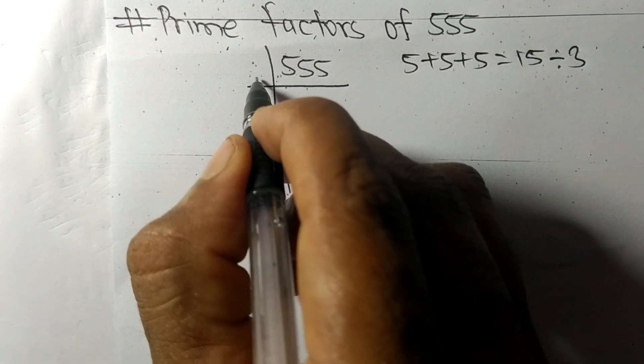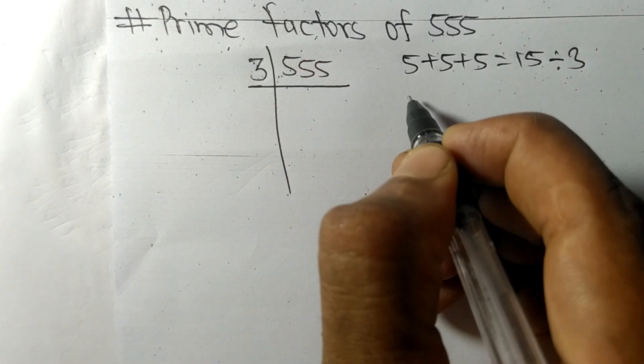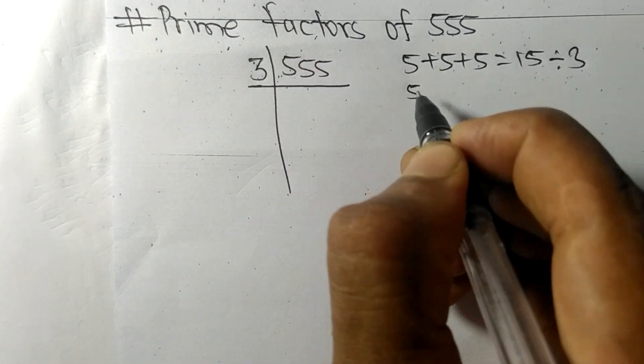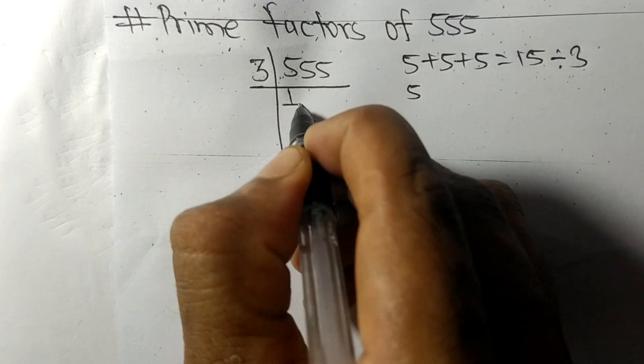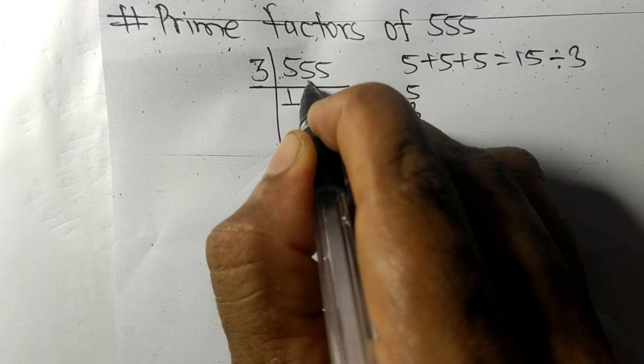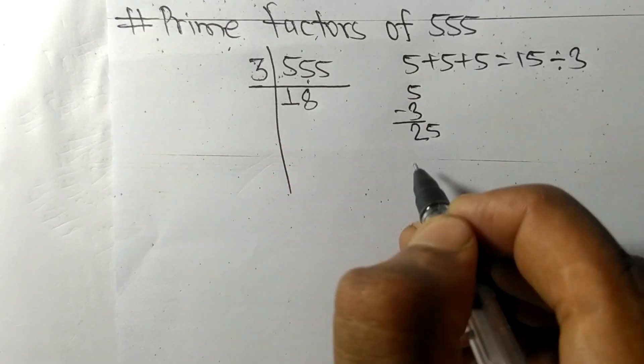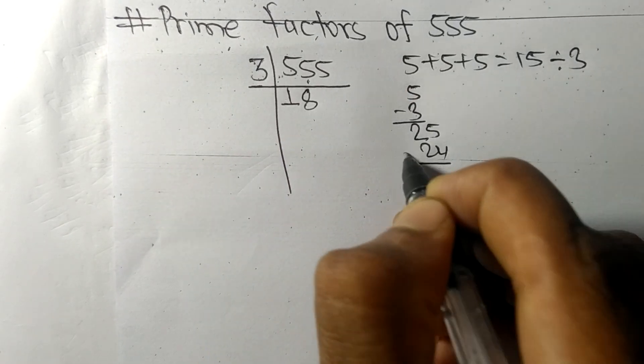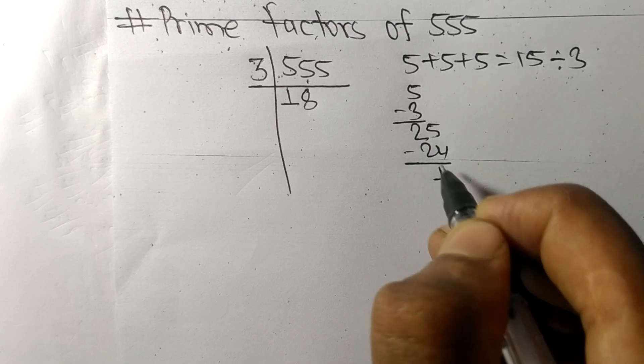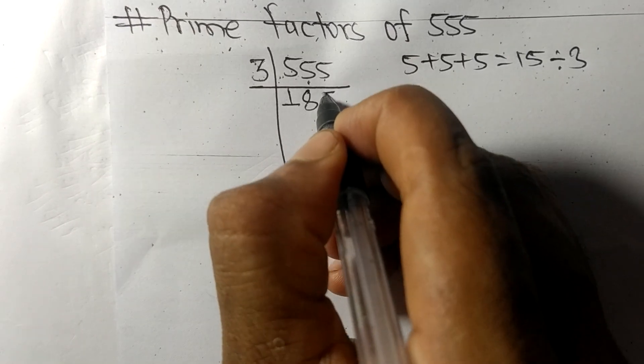So this whole number is also divisible by 3. We have 555 divided by 3: 3 times 1 is 3, remainder 2. This 5 makes 25, 3 times 8 is 24, remainder 1. This 5 makes 15, 3 times 5 is 15.